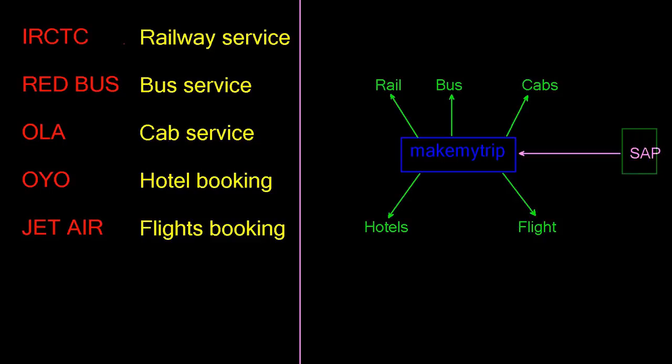SAP is like all-in-one — the SAP application will provide all services in one platform. In any organization, different departments are there: administration, finance, sales, marketing, and HR. For coordination of all these departments, SAP provides one software — that is ERP. So SAP is an all-in-one software where all departments are integrated in one application.